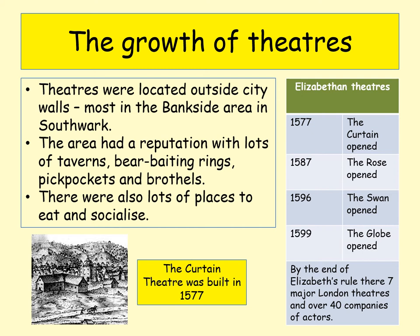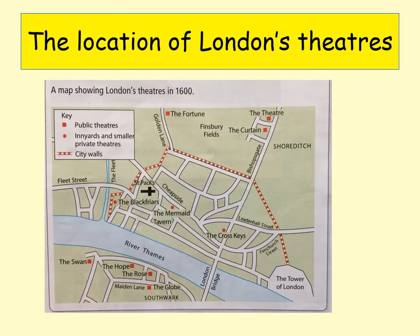Here on the right are some of the most famous Elizabethan theatres built during this time. There's the Curtain Theatre in 1577, then the Rose, the Swan, and then probably the most famous Elizabethan era theatre — the Globe Theatre — which was actually reconstructed near to where it was originally and opened in 1997. This map shows you those theatres: in the south of the River Thames you can see the main theatres in the Bankside area of Southwark.